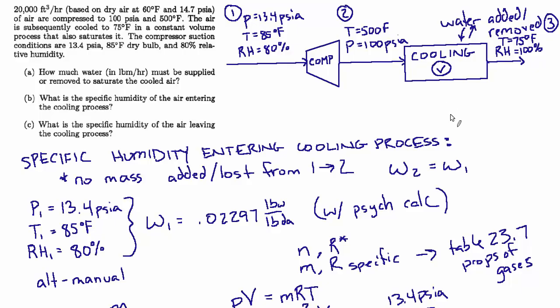So now we're ready to look at question A. Since we know the specific humidity at state two and state three, we can figure out that delta and we can answer the question: how much water in pounds per hour is being removed to saturate the cooled air? Now that we know it's definitely removed, that's going to be this formula, mass flow rate of water.